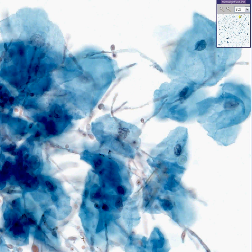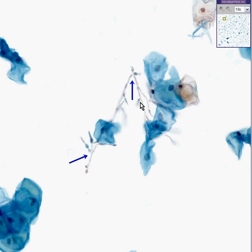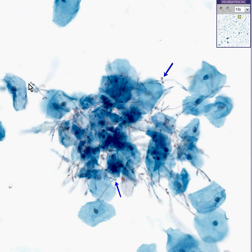The hyphae, if you notice, in this section branch at about 45 degrees. There's no trouble finding these little budding yeasts as well.